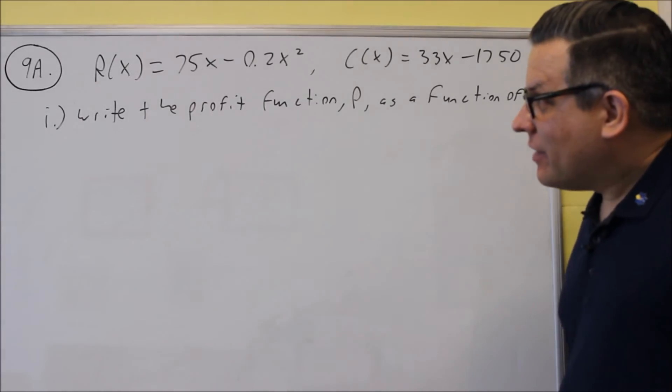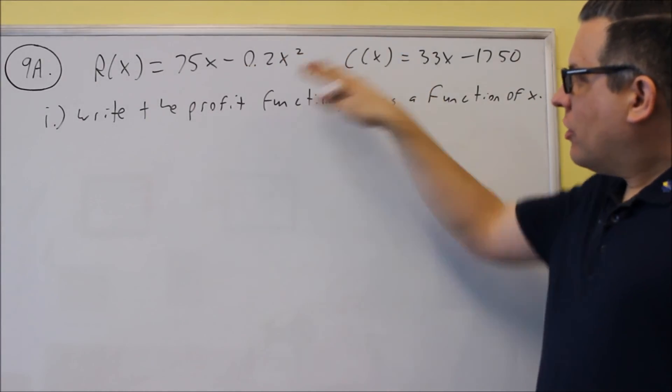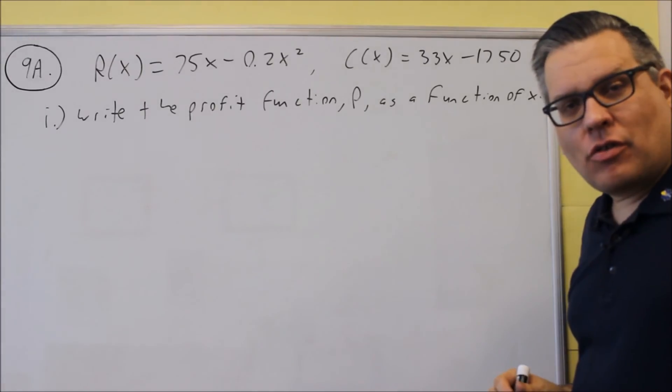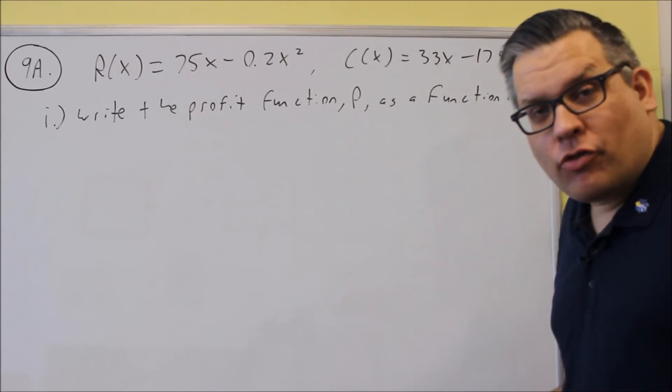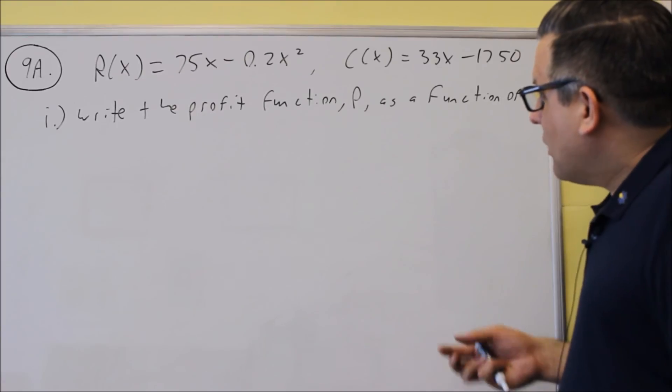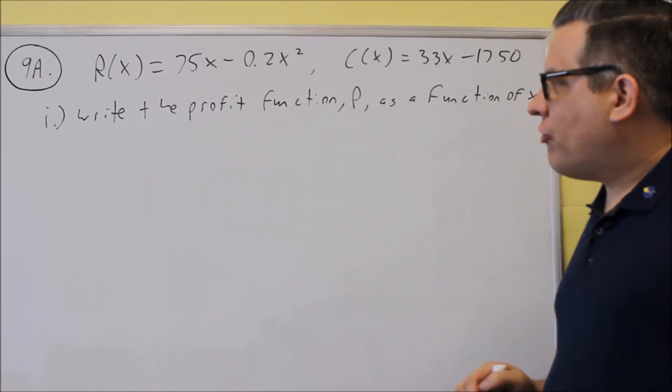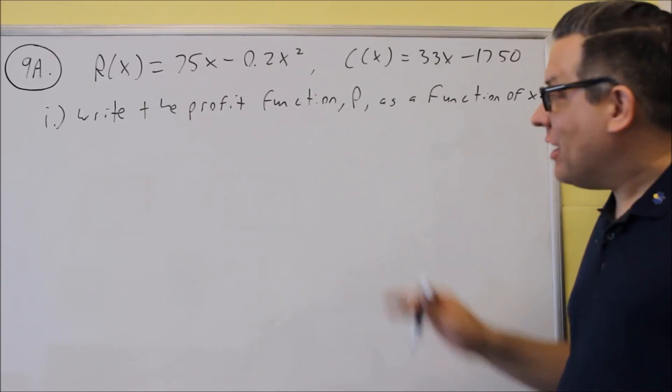Okay, for problem 9a we are given a revenue and a cost equation, and they're saying that x represents the number of watches. The first thing asked for is to write the profit function P as a function of x.